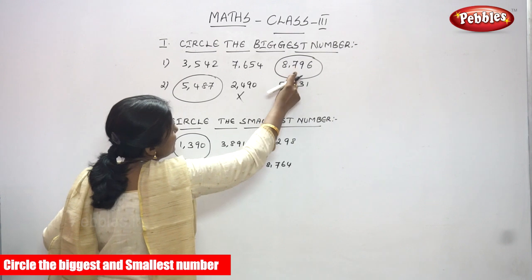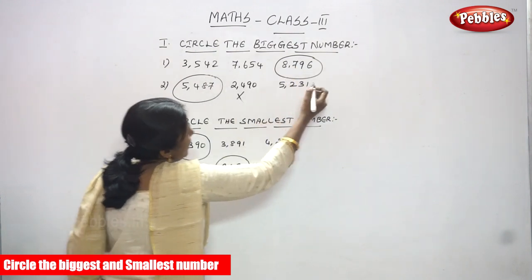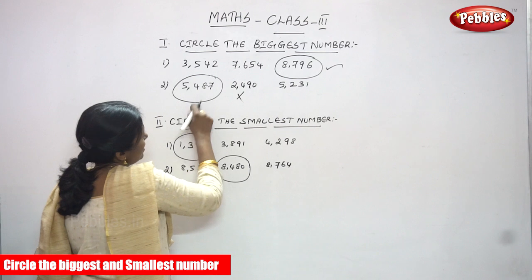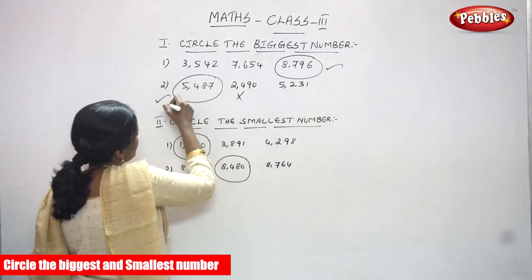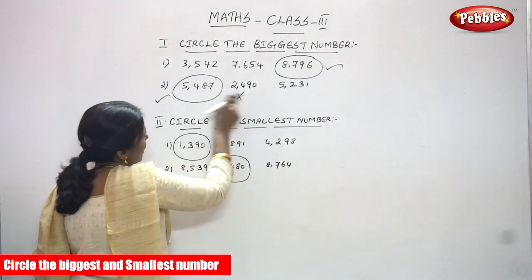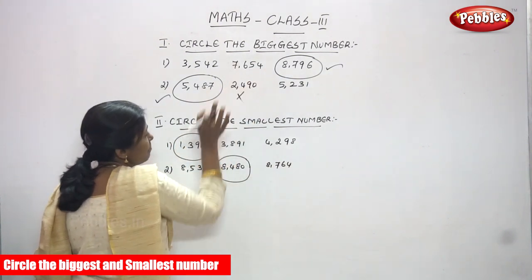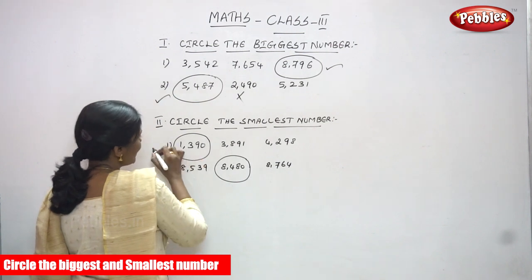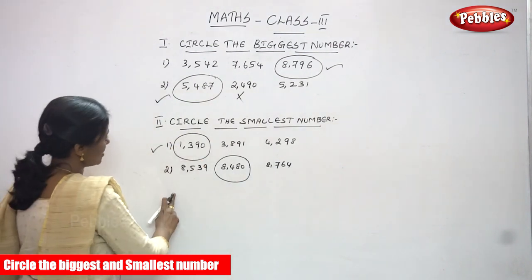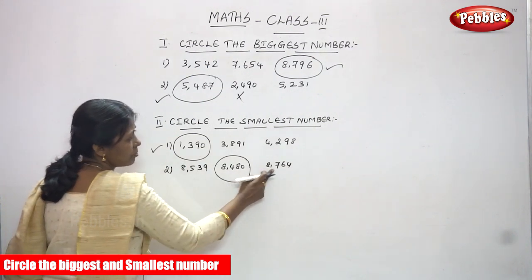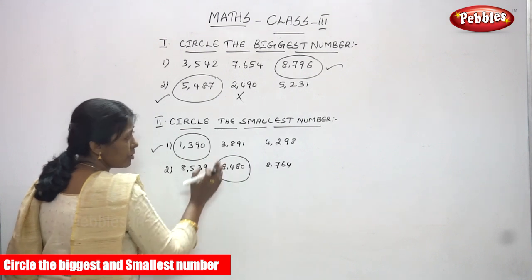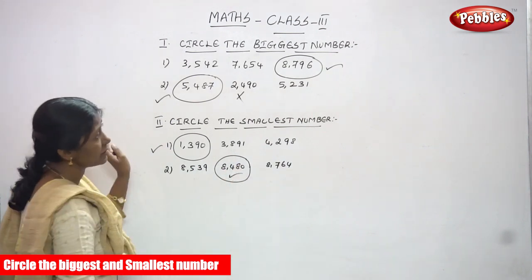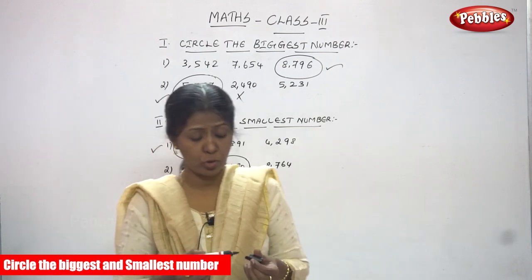Let me review all answers. First question — circle the biggest: the answer is 8796. Second question — circle the biggest: the answer is 5487. Third question — circle the smallest from 1390, 3891, 4298: the answer is 1390. Fourth question — circle the smallest from 8539, 8480, 8764: the answer is 8480. I think you understand this concept very clearly.